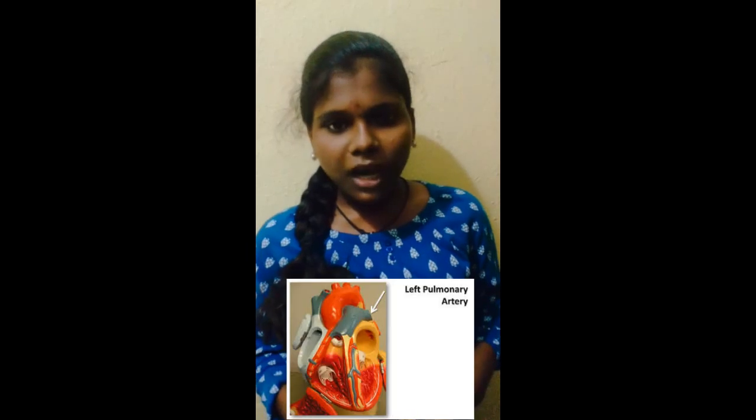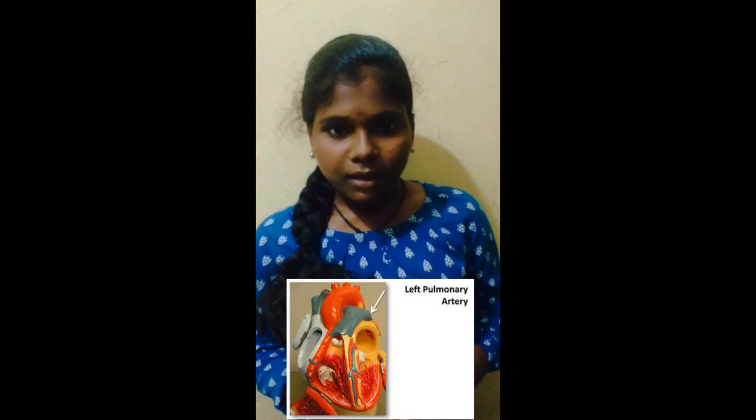The ventricle valves are thicker than the auricle valves. The largest artery is the aorta, which arises from the left ventricle and supplies blood to all body parts except the lungs. The pulmonary artery arises from the right ventricle and supplies deoxygenated blood to the lungs.